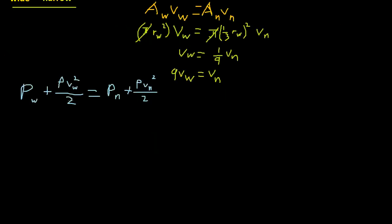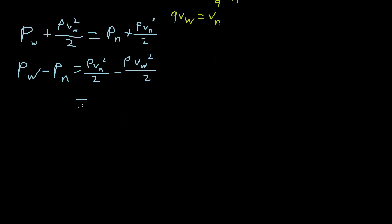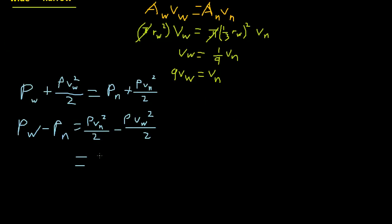So this is asking for P wide minus P narrow. Let's rearrange this so we get P wide minus P narrow. So we subtract P narrow from each side and subtract this from each side. So we get rho v narrow squared over 2 minus rho v wide squared over 2, and now we just plug in and simplify. So we have rho, and what is v narrow? v narrow is 9 v wide, and v wide is the initial speed because it starts at wide.